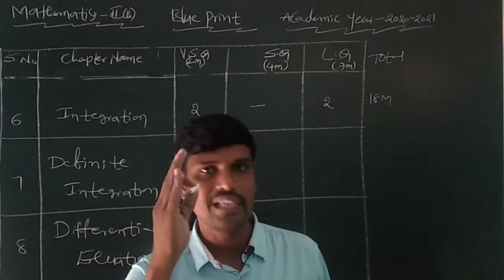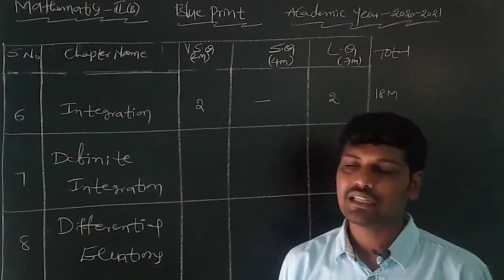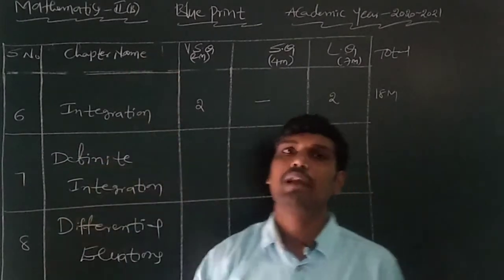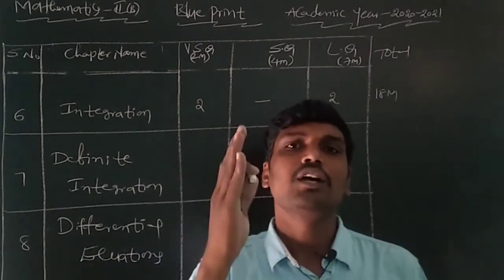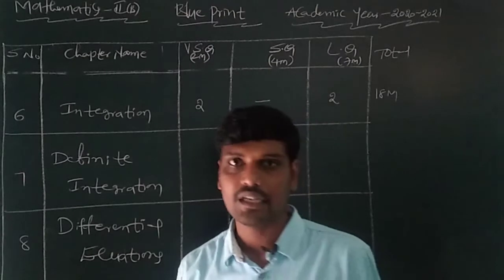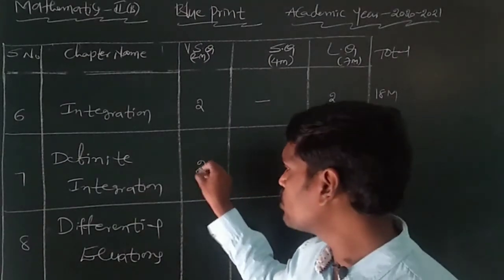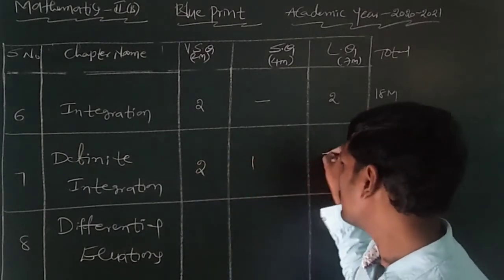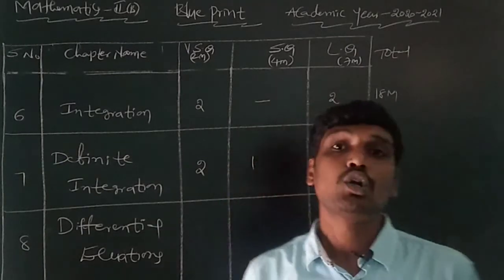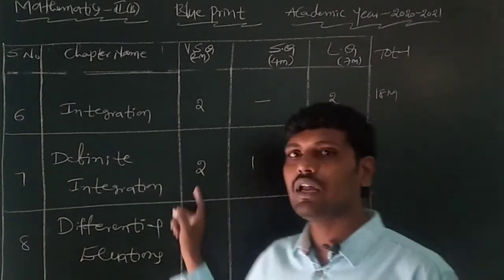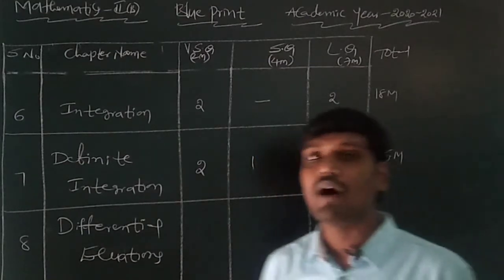The seventh chapter is Definite Integration, which also belongs to the Integration topic. In this chapter: two 2-mark questions, one 4-mark question, and one 7-mark question are coming. Total: 2+2+4+7 = 15 marks coming to the IP examination from the Definite Integration chapter.